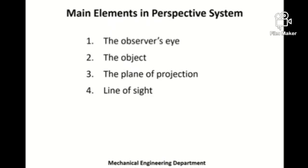Now let us start with the main elements used in the perspective drawing system. I want to highlight that the terminology learned in orthographic projections — where the observer is assumed to be standing at infinite distance and the projectors are parallel to each other — should be kept aside while doing perspective projection. The parallel projection system and perspective projection system are quite different, so please don't confuse the terms. There are four main elements: observer, object, plane of projection, and line of sight.